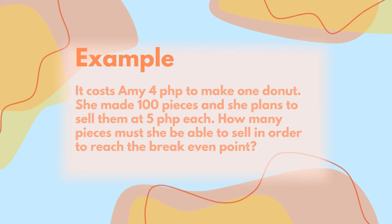An example of a word problem is: it cost Amy 4 pesos to make one donut. She made 100 pieces and she plans to sell them at 5 pesos each. How many pieces must she be able to sell in order to reach the break-even point?